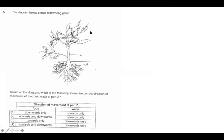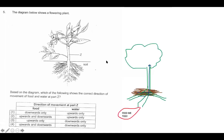This diagram shows a flowering plant. Based on the diagram, which of the following shows the correct direction of the movement of food and water at part Z? Okay, I've just drawn a little plant. So we can see the roots underneath the soil, and we can see that the water is moving from the roots, and that's going up. And the roots down here, they need food. And where is the food being produced? Up here in the leaves. So at the top, it needs water, and at the bottom and the top, it needs food. So the direction of food is up and down, and water is going only up. The answer is two.